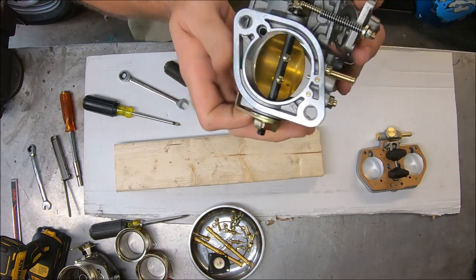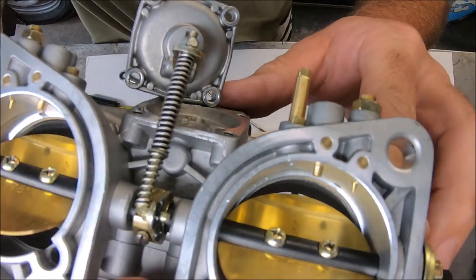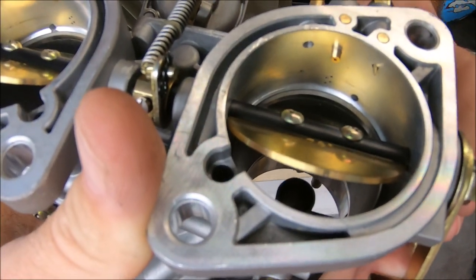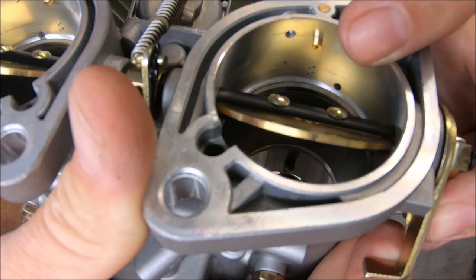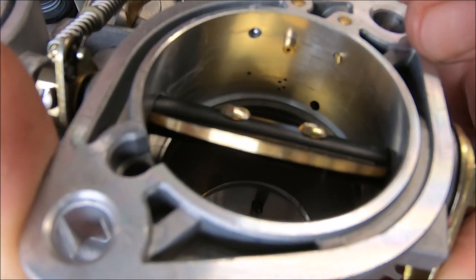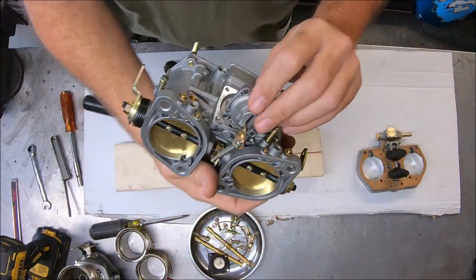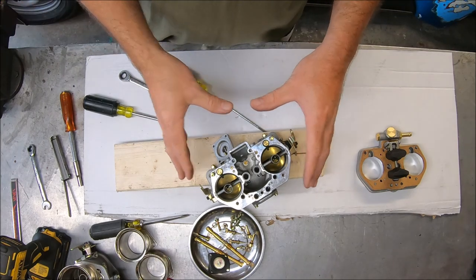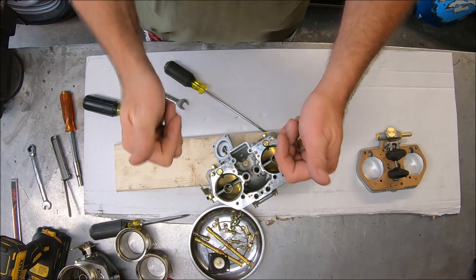Oh, and before I forget, I was showing somebody else this. If you look down in there, there are actual four progression holes right down here. So these are just like the Webers and Redlines and Empies. All right. I'll blow brake clean through everything, compressor everything, reassemble, set our float. We'll be good to go.